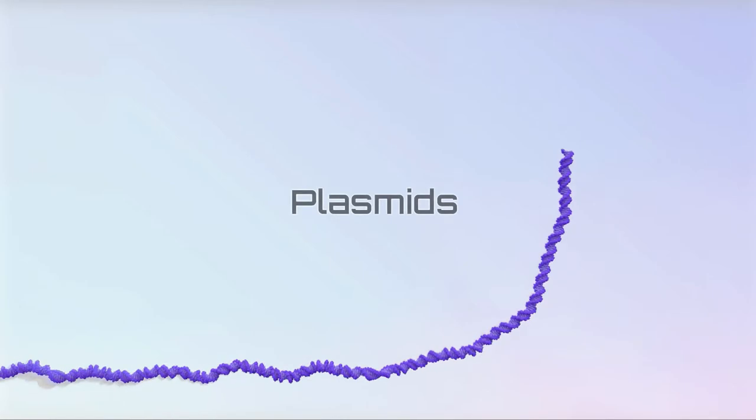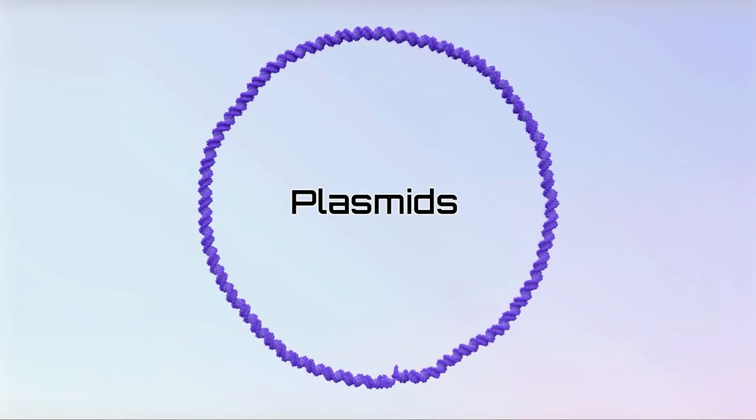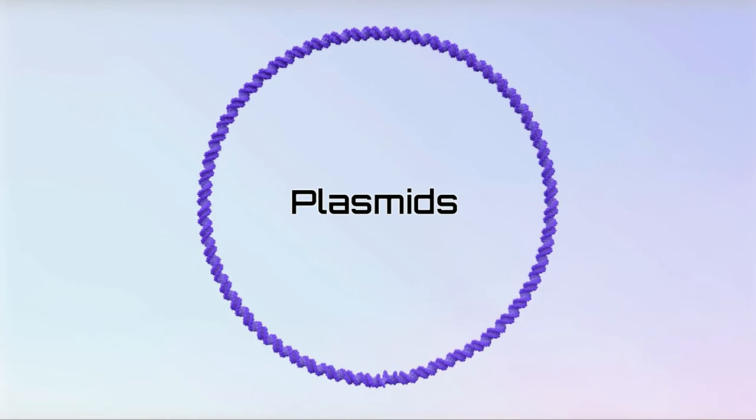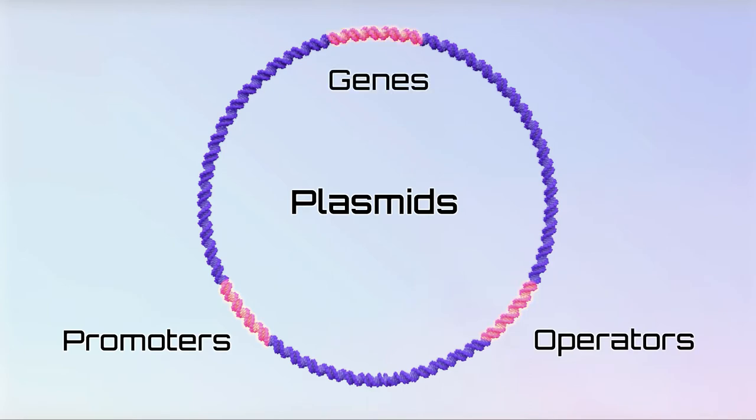As you know, plasmids are circular pieces of DNA used to drive the production of specific proteins. These plasmids include promoters, operators, and associated elements like genes that encode for specific antibiotic resistance proteins and the target protein.